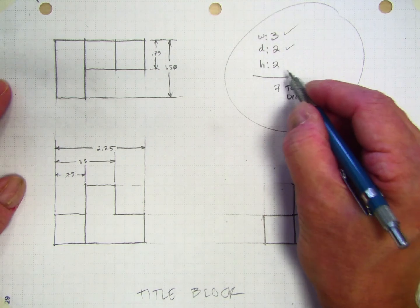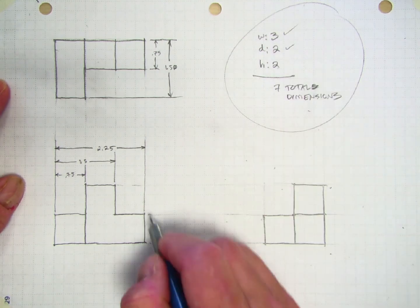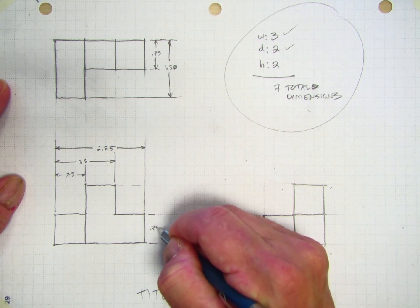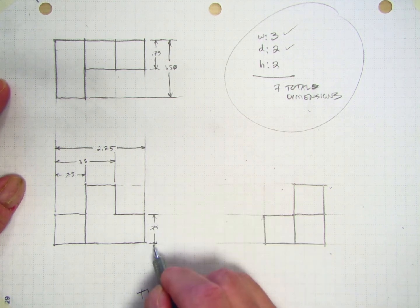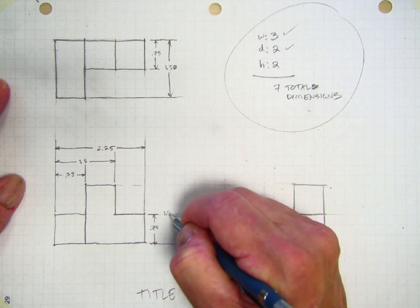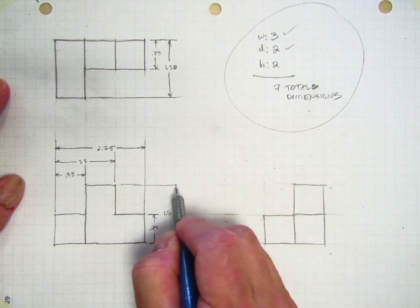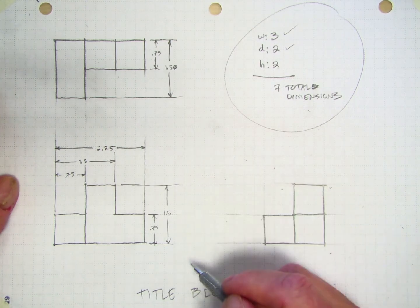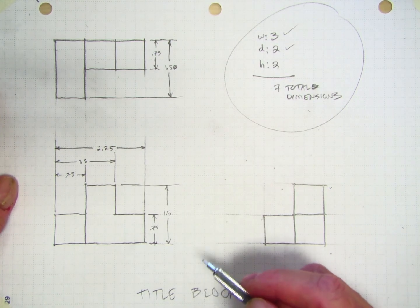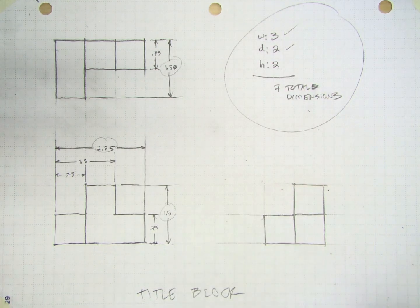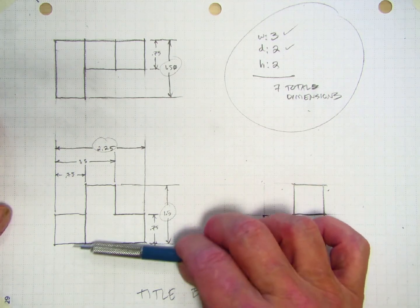The last thing we need are the height dimensions. Those I'm going to put on the front view, one from the bottom of the part to this edge, and again, extending that common baseline, we just need the overall height. If you review your dimensioning guidelines, you will see that we are required to have the overall depth, overall width, and overall height. I've got those, and then we're required to have exactly one dimension to each edge in the part.